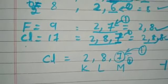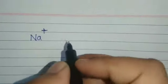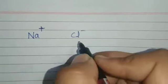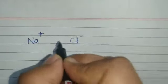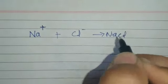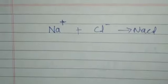Now we have studied both sodium and chlorine. Sodium has a Na⁺ charge and chlorine has a minus one charge. When Na⁺ and Cl⁻ combine, we get NaCl — sodium chloride. We will continue in the next video.